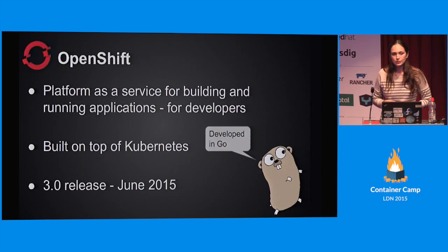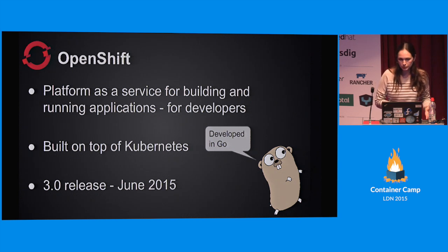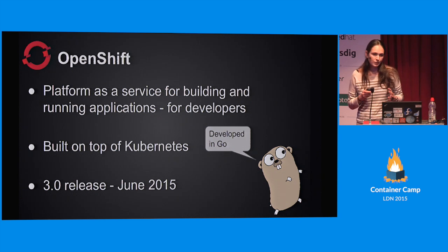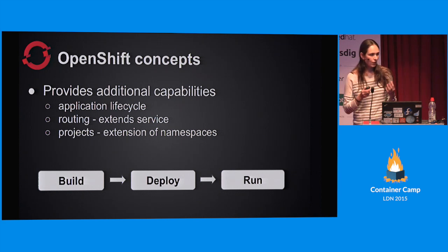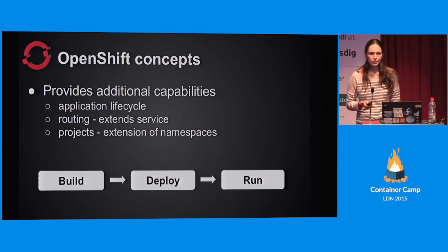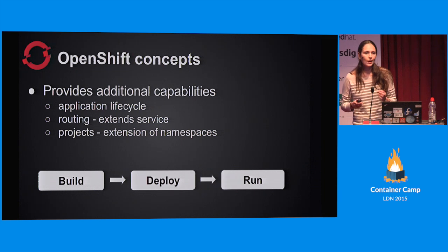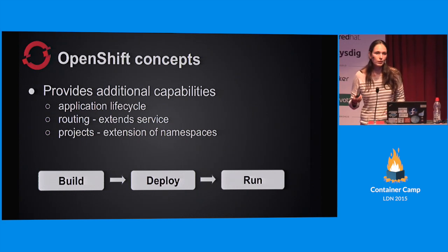Here comes OpenShift. OpenShift is a PaaS - platform as a service - and its third version is actually built on top of Kubernetes, so it leverages all of those core concepts I just spoke about. But it does more: it takes an application lifecycle and provides developers with the ability to define how a build is supposed to look like - taking your Git repo, committing a change, building it into a Docker image - then how your deployment is supposed to look like, under which circumstances that deployment should occur, and then the runtime part, which is running orchestrated containers on hosts and keeping the replicas alive.